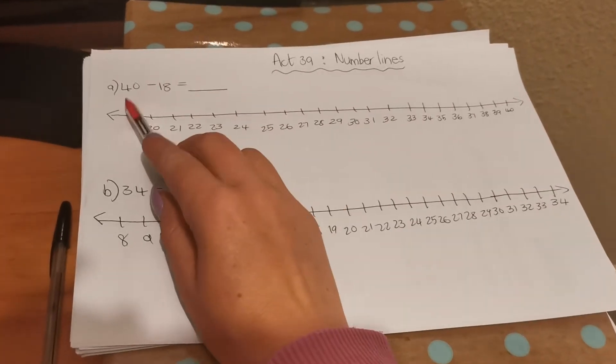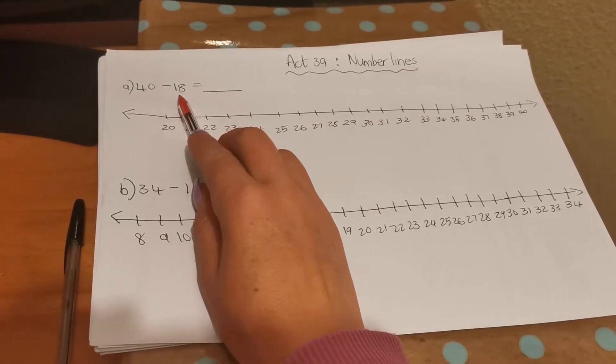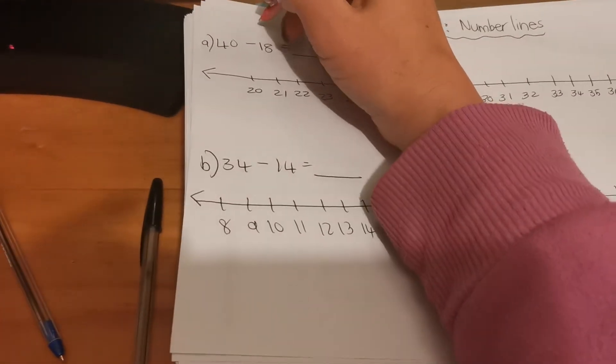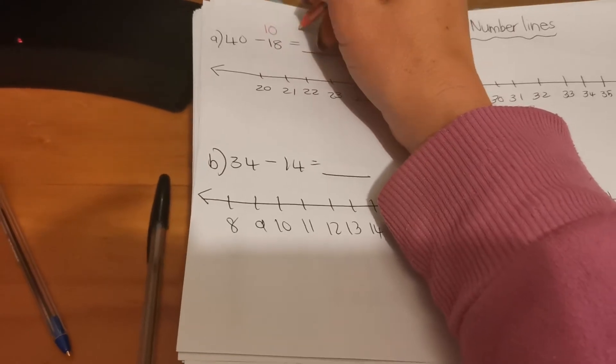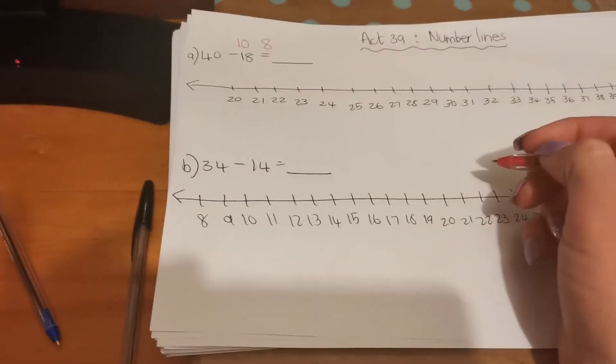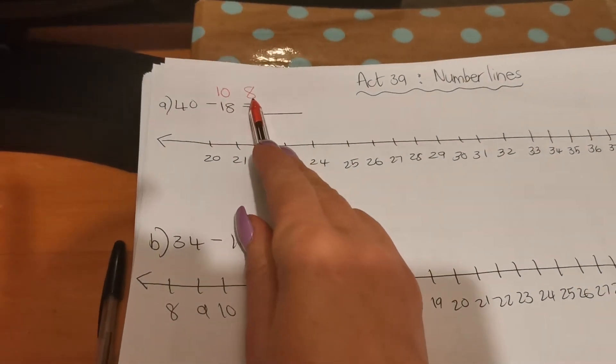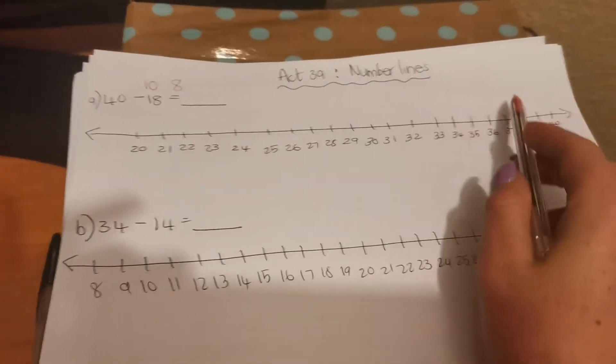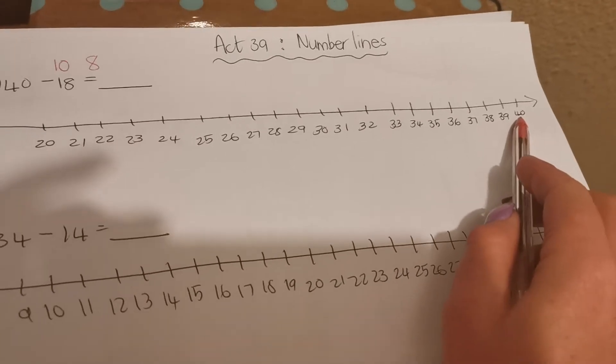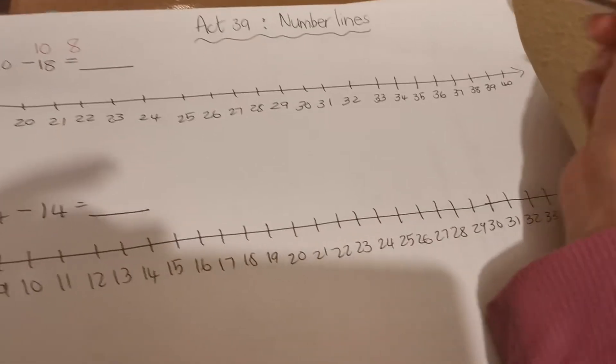So the first sum is 40 take away 18. Now remember, if you break up 18 into tens and units, it will be 10 and 8. So you're first going to take away 10 and then you're going to take away 8. So we're going to start at 40. 40 take away 10 is 30.